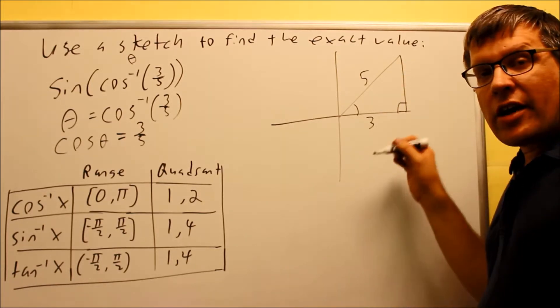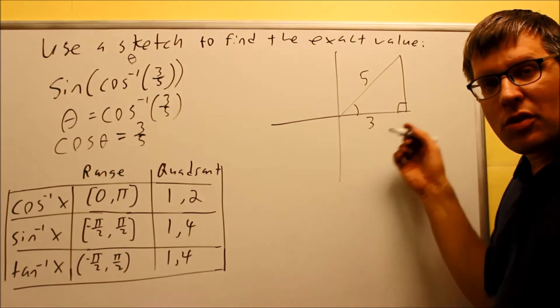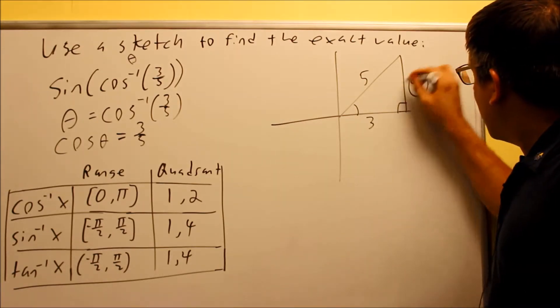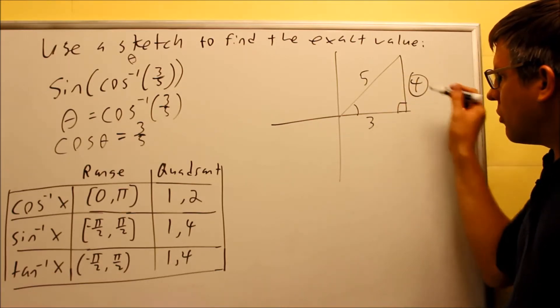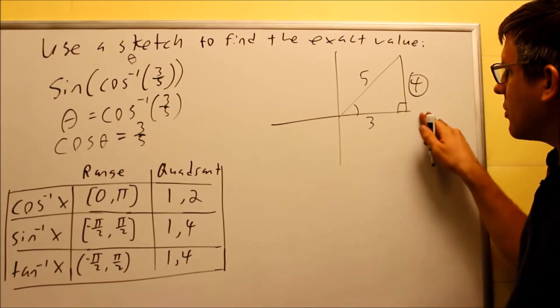Now, if you use Pythagorean Theorem, or you might recognize that this is going to be a three, four, five triangle, we're going to find that the missing side here is going to be four. So this is going to answer, this will complete your whole entire triangle. Now based on this, now that I have the triangle drawn, I'm ready to look on the outside of the trig function.